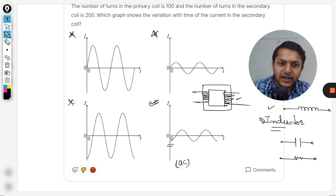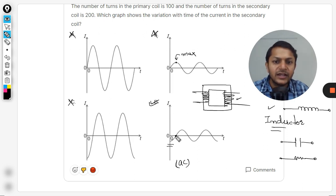Lagging means when the current in the primary coil will be max, at that time the current in the secondary coil is zero. This is known as lagging.